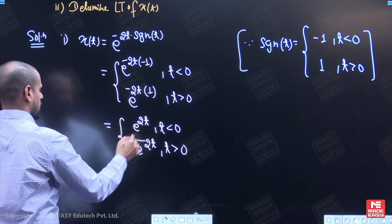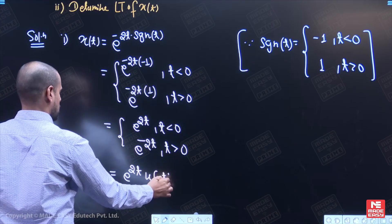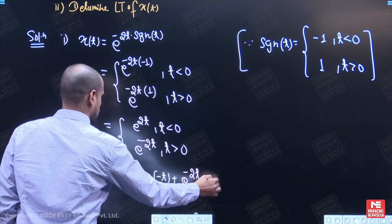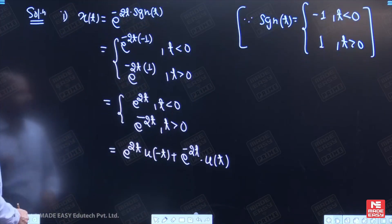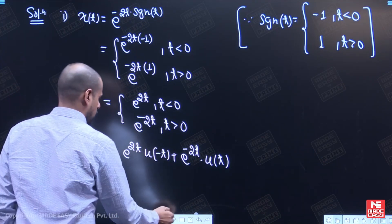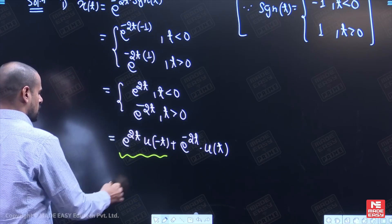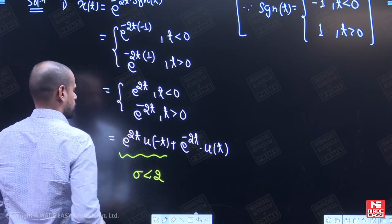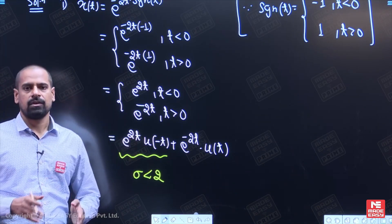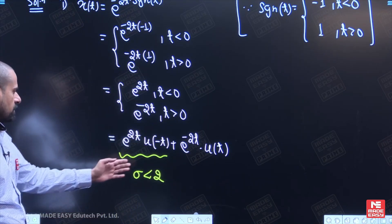We can write the first part as e to the power 2t into u(minus t). Now, in the first part of this question, we have to write down the ROC. For the first term, the region of convergence is sigma less than 2. Why? Because this signal is left-sided, and for a left-sided signal the ROC will also be left-sided. That is why sigma less than 2.